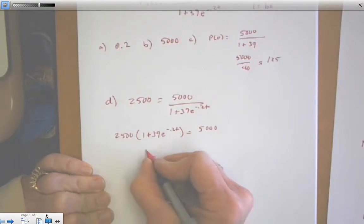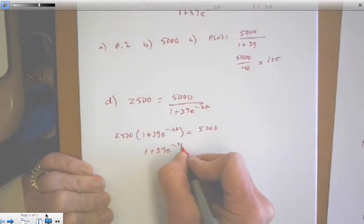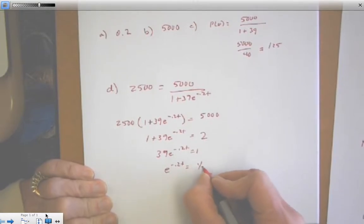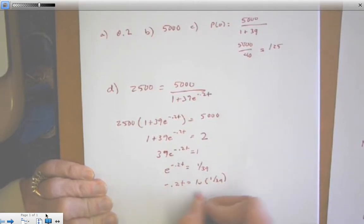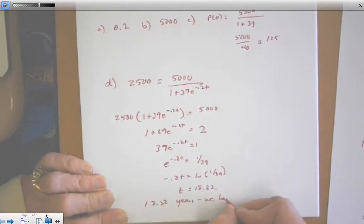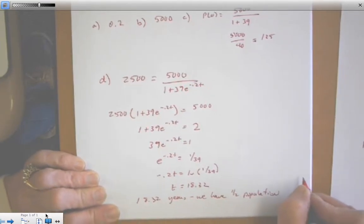Going to have to use some algebra here. Divide by 2,500. Let's subtract 1. Divide by 39. Write the natural log of both sides. And use your calculator, and T is about 18.32, so 18.32 years. We have one half the population.